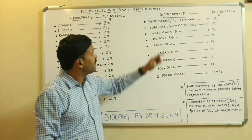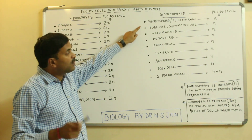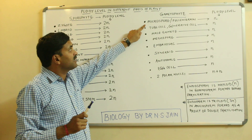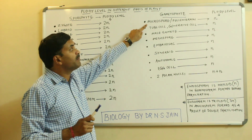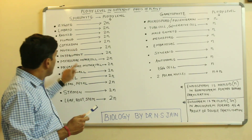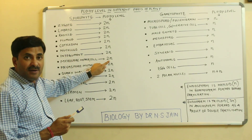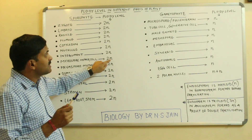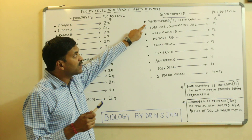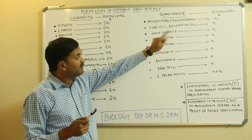Now, if we talk about the ploidy levels of gametophytes, the ploidy level of gametophytes will always be N. The microspore is also called the pollen grain. When the microspore mother cell, which has ploidy level 2N, divides by meiosis, it produces microspores, and because they are the product of meiosis, the ploidy level of the microspore will be N.